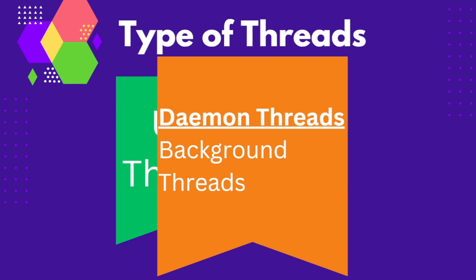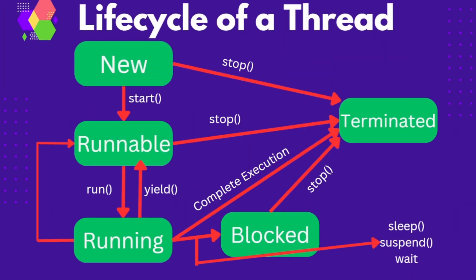If there is any doubt till this point, please let me know, because these are very important concepts and can be asked in interviews for entry-level designations as well. Moving forward, in Java, threads go through several stages in their life cycle. Understanding these stages can help us manage and control their behavior within the program. Here are the different stages of the thread life cycle: new, runnable, running, blocked, and terminated. Let's see these in detail — when a thread will be in a specific state.